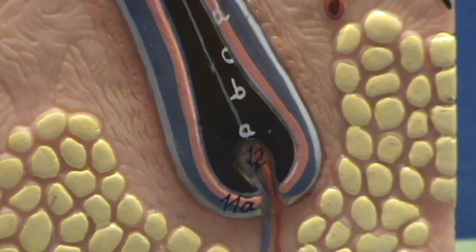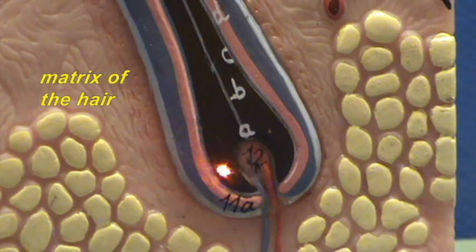Right above the hair papilla, you find the matrix of the hair, a single cell layer where you have growth.